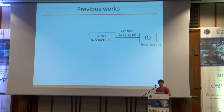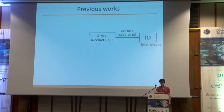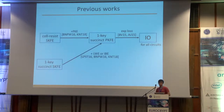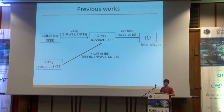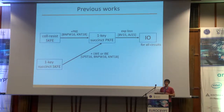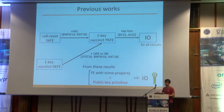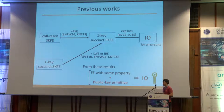Bitansky and Vaikuntanathan, and Ananth and Jain showed how to construct I.O. for all circuits based on sub-exponentially secure single-key succinct PKFE. Subsequent works showed we can construct single-key succinct PKFE based on collusion-resistant SKFE if we additionally assume public key encryption, and also based on single-key succinct SKFE if we additionally assume the hardness of the LWE problem or identity-based encryption. So the combination of functional encryption with succinctness or collusion resistance and some public key primitive implies I.O. for all circuits.